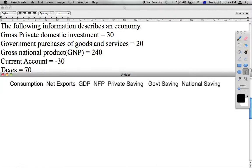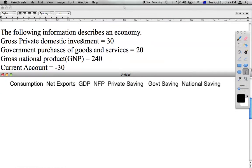Okay, so the following information has been given to describe an economy. We must use this information to figure out each of these variables. The strategy I would use is I would figure out the easiest variables first, and then work towards the harder ones.